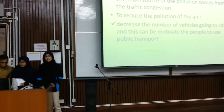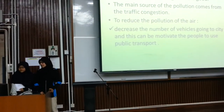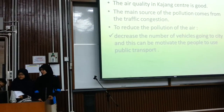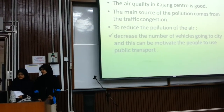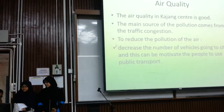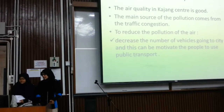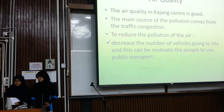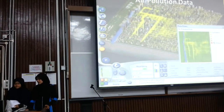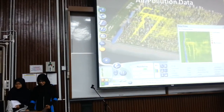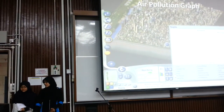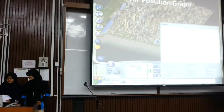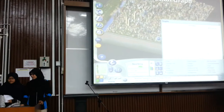The next one is air quality. The air quality in the Kajang centre is currently good. The main source of pollution comes from traffic congestion. To reduce air pollution, we decrease the number of vehicles going to the city, which can be achieved by encouraging people to use public transport. This is the air pollution data and graph — the data is increasing throughout the years.